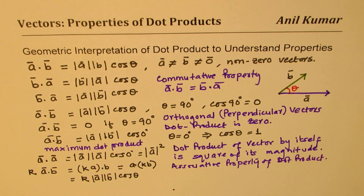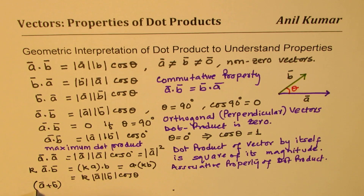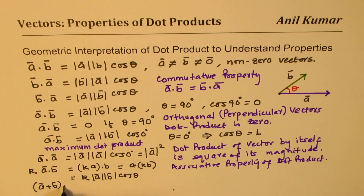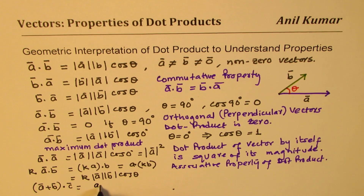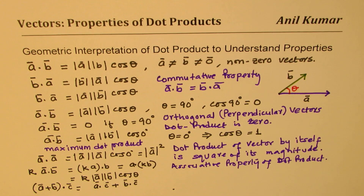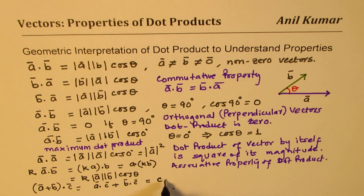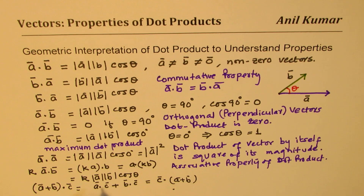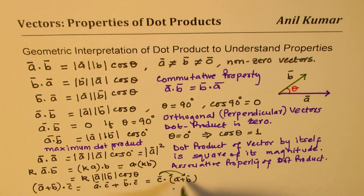Another property: if I am adding two vectors a and b and then taking the dot product with vector c, then (a+b)·c equals a·c plus b·c. This order can be changed — we could also write c·(a+b) and get the same result by the commutative property. So we are distributing the dot product of vector c with a and with b and then adding the results. This is the distributive property of dot product.